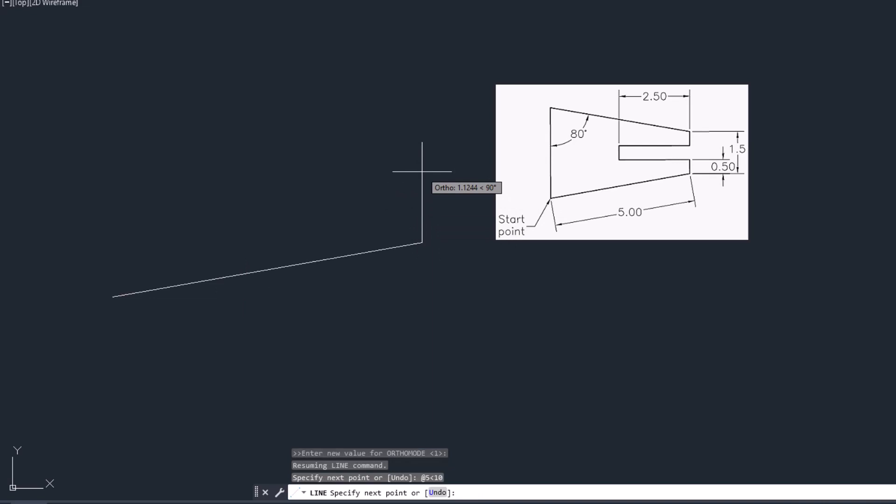Now I want to draw a vertical line. So shift at the rate, the length of the line that is 0.5 less than. Now we are moving in upward direction, so it is 90 degree. Type 90, enter.